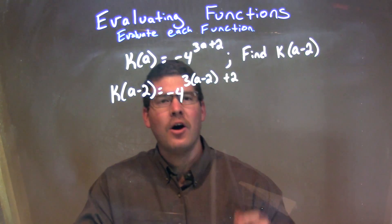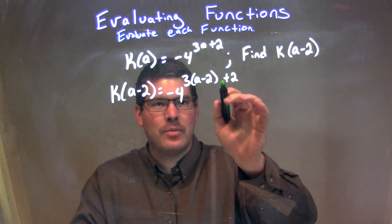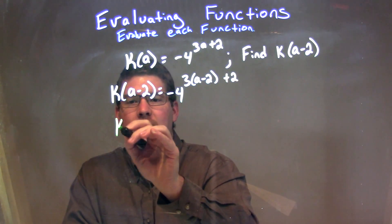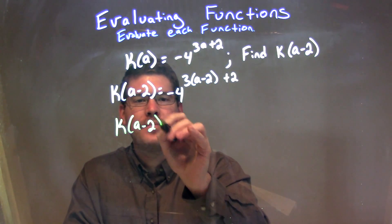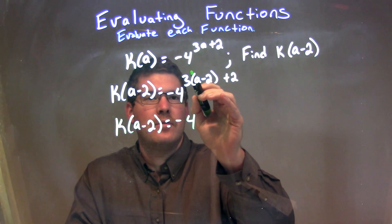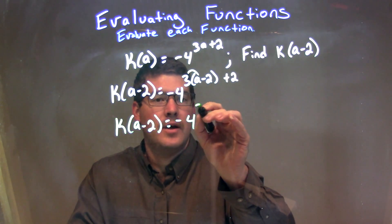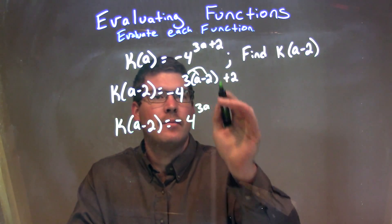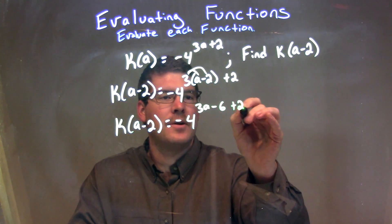This one gets a little tricky, because all of really what's happening is going to be in that exponent. We have k now of a minus 2, let's bring that down. We have negative 4 to the power, we need to distribute this 3, so 3 times a is 3a, and 3 times a minus 2 is a minus 6, and then we have a plus 2 over here.